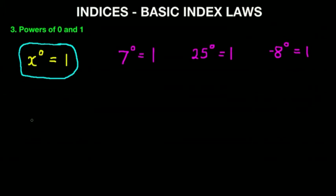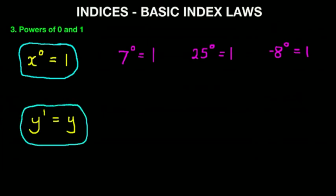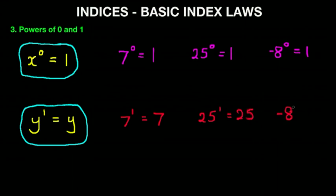Now let's move on to powers of one. Suppose we have y to the power of one — that becomes simply y. Any number to the power of one is the number itself. For example: 7 to the power of one is 7, 25 to the power of one is 25, and minus 8 to the power of one is simply minus 8.